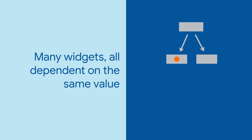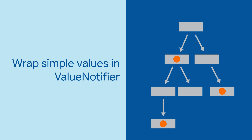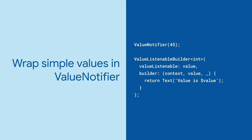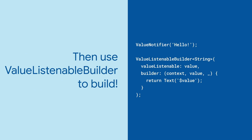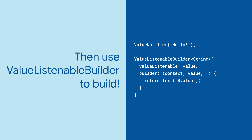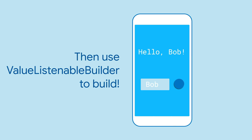Let's say you have a bunch of widgets scattered throughout the widget tree that are dependent on a particular value. For simple values, like strings or integers, wrap them in a ValueNotifier, which will manage the value state and notify listeners when it changes. When you want to use the value in a widget, wrap it in a ValueListenableBuilder. ValueListenableBuilder will listen for changes to a ValueNotifier and automatically rebuild its children when the value changes.